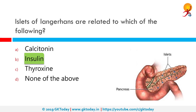It was discovered in 1869 by German pathological anatomist Paul Langerhans and named after him. The pancreatic islets constitute 1-2% of the pancreas volume and receive 10-15% of its blood flow.